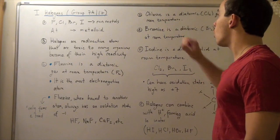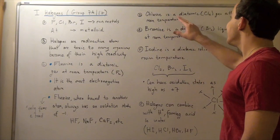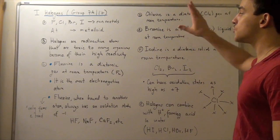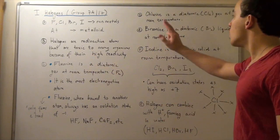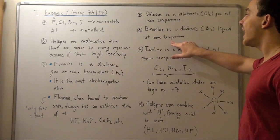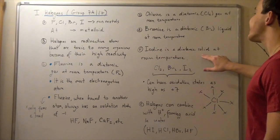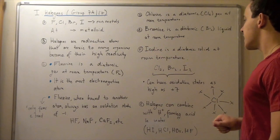Let's look at chlorine. Chlorine is a diatomic gas at room temperature, just like fluorine. Bromine is a diatomic liquid at room temperature, and iodine is a diatomic solid at room temperature.